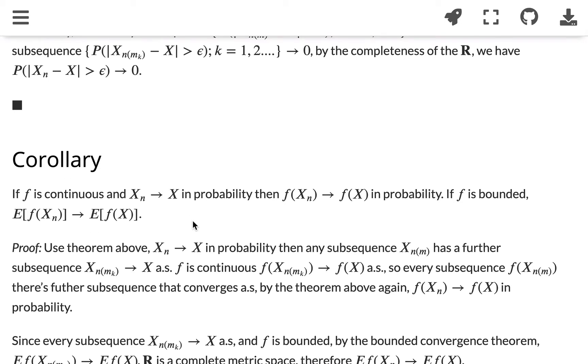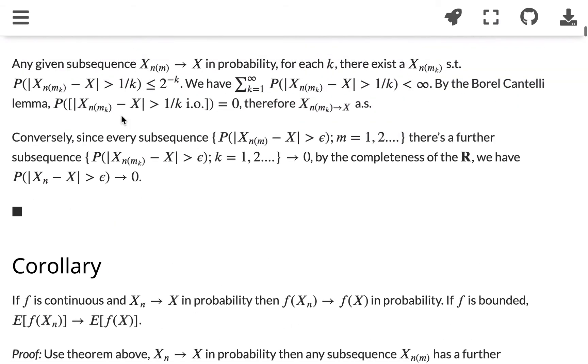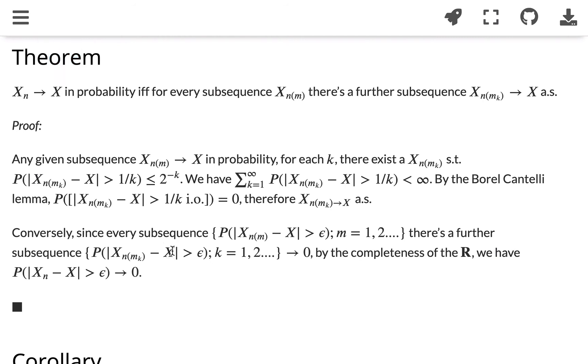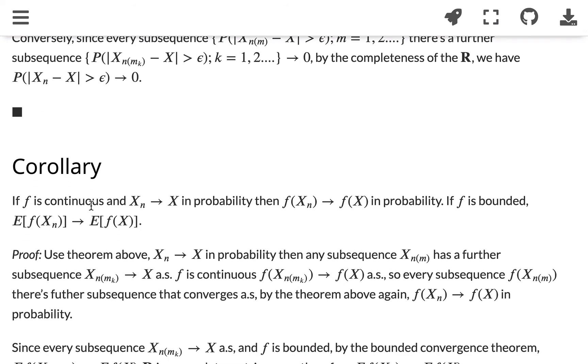The next one is a corollary that is related to this theorem, which says that if f is a continuous function and x_n converged to x in probability, then f(x_n) converged to f(x) in probability. If f is bounded, then the expected value of f(x_n) converged to the expected value of f(x).